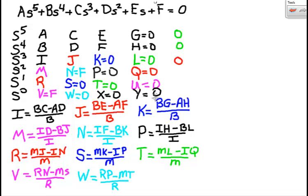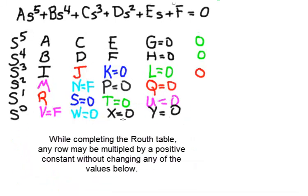We're ready to answer the question about the roots of the closed loop characteristic equation. While completing the Routh table, any row may be multiplied by a positive constant without changing any of the values below.